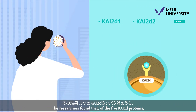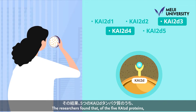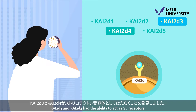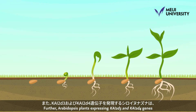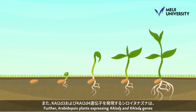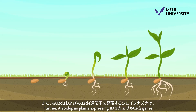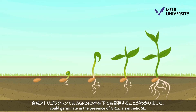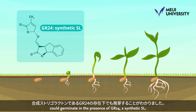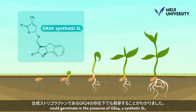The researchers found that of the five CHI2D proteins, CHI2D3 and CHI2D4 had the ability to act as SL receptors. Further, Arabidopsis plants expressing CHI2D3 and CHI2D4 genes could germinate in the presence of GR24, a synthetic SL.